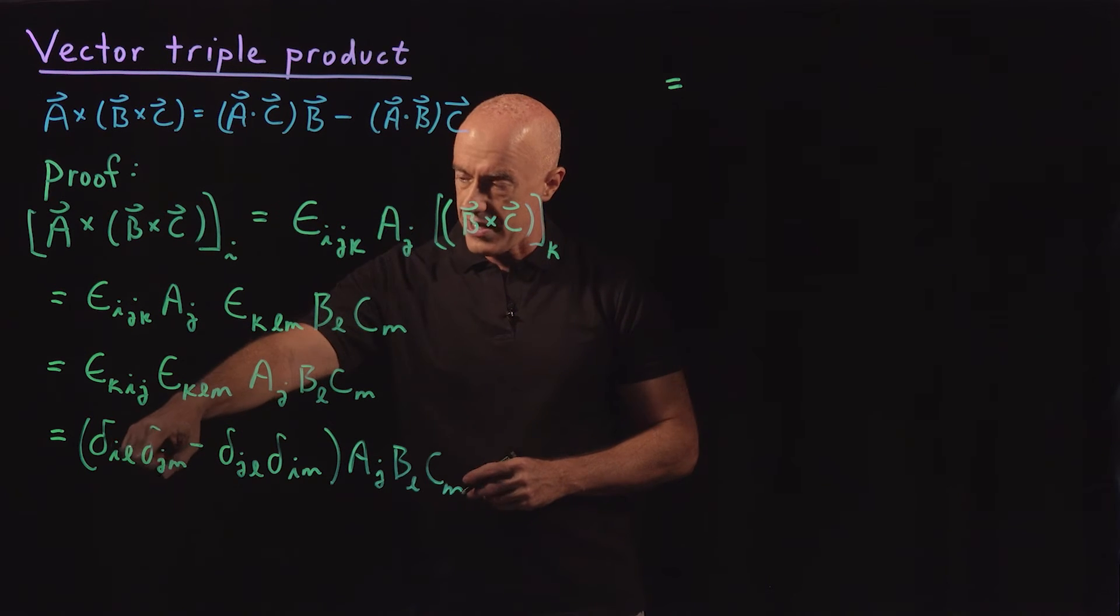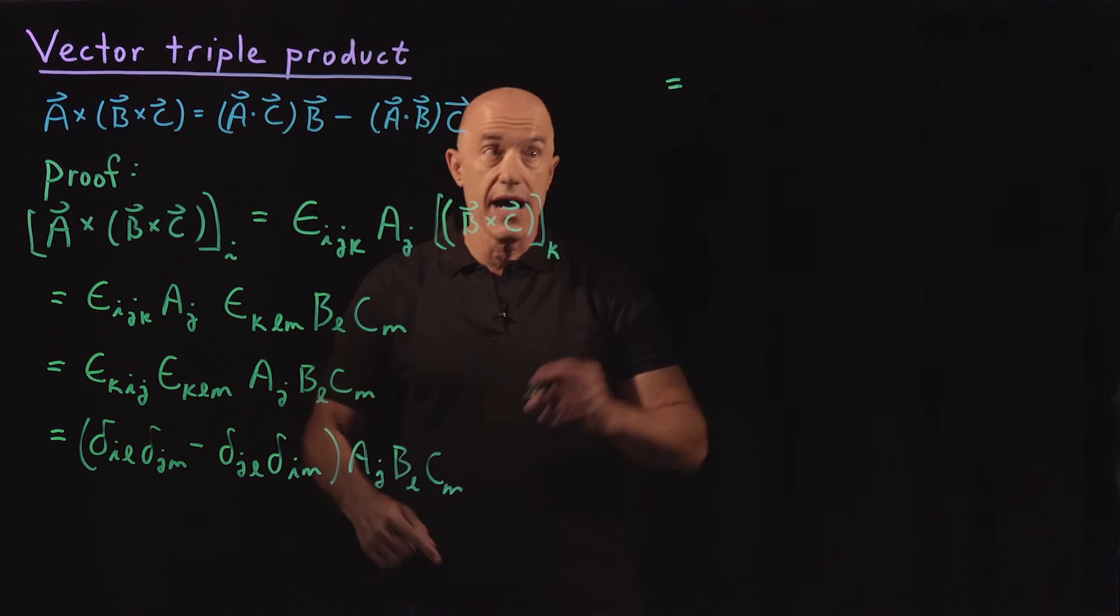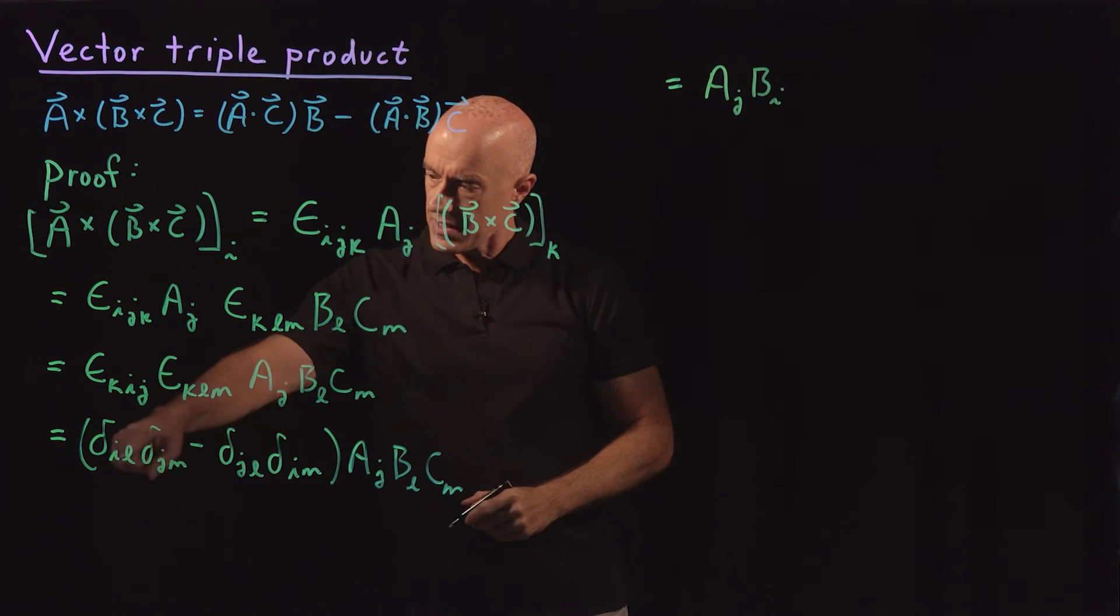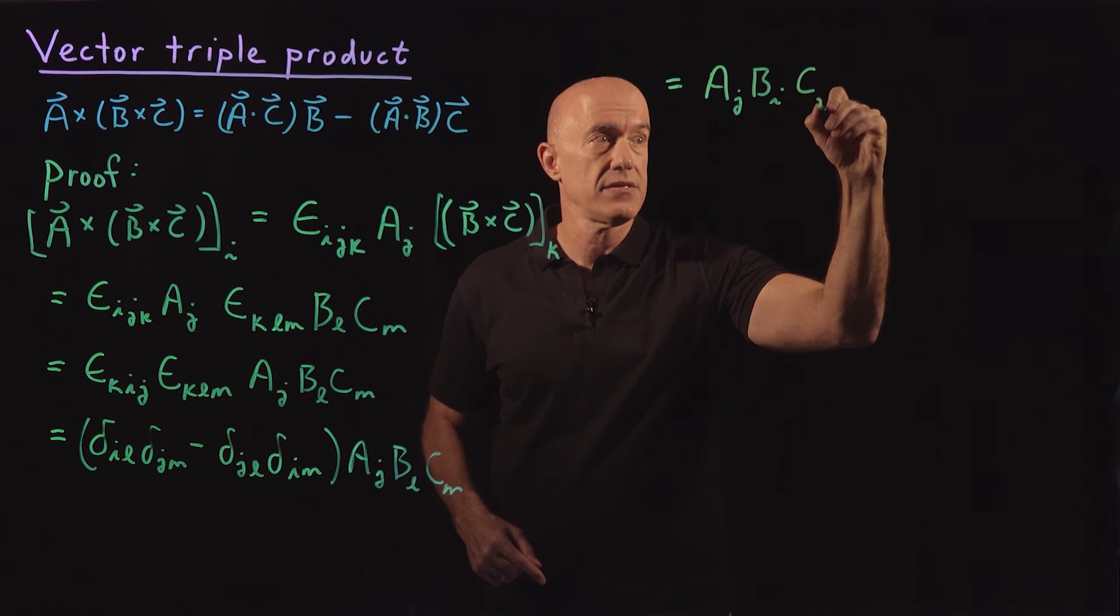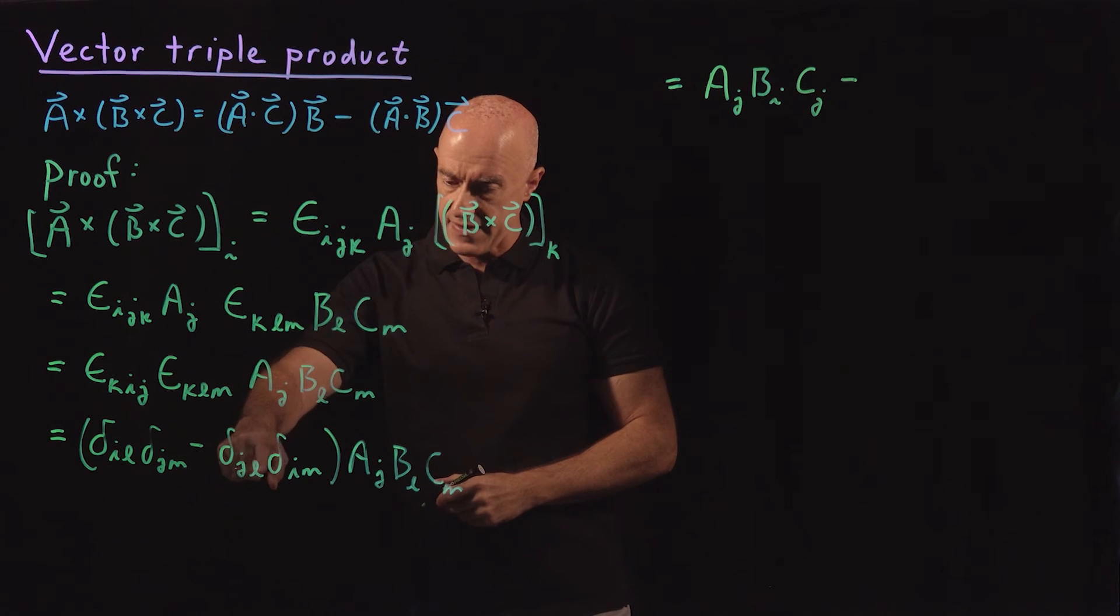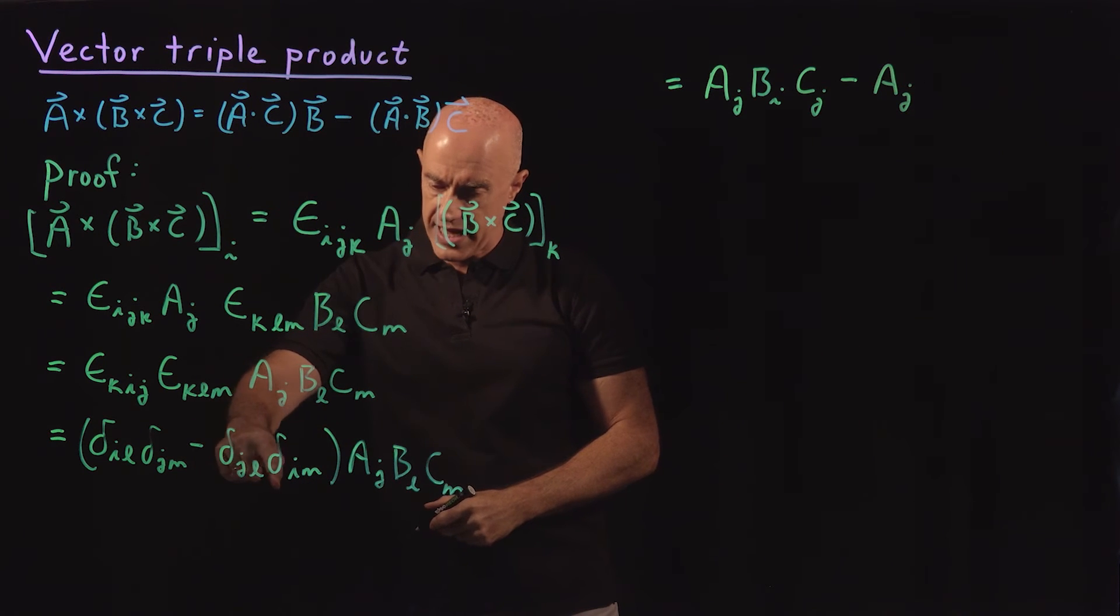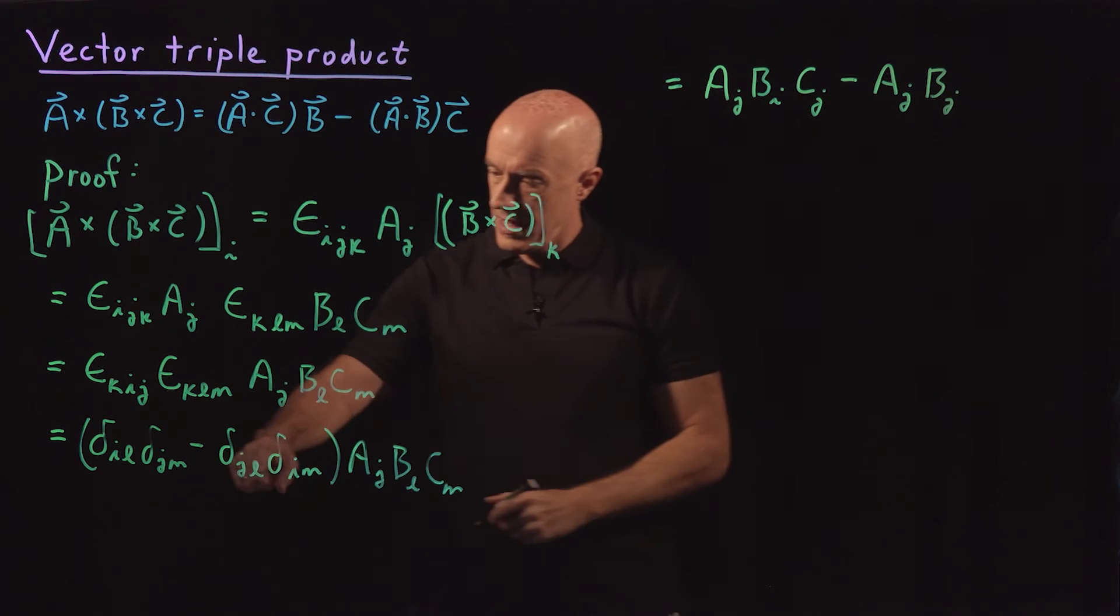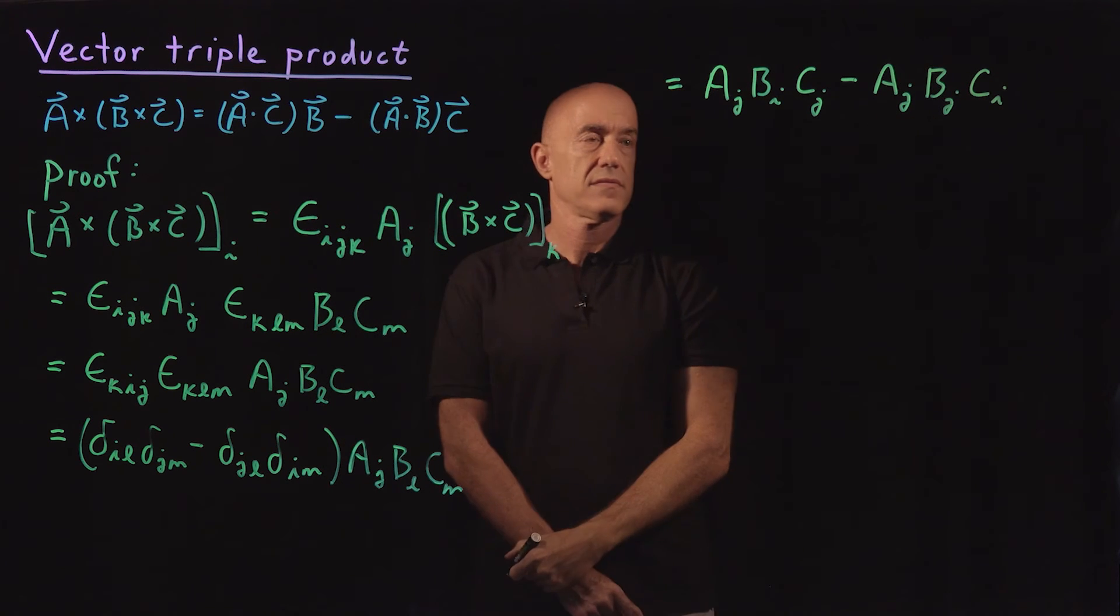So if we do the first one, delta_{i,l} times B_l is B_i. So we'll get A_j B_i, and delta_{j,m} C_m is C_j. So we have A_j C_j. And then minus, now I'm going to contract the l, so we have A_j again. And then we'll have delta_{j,l} B_l will be B_j. And delta_{i,m} C_m will be C_i.